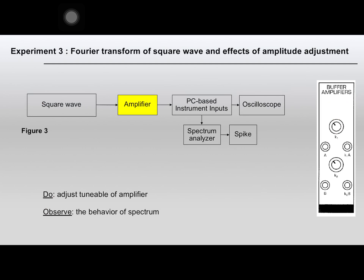In Experiment 3, construct the circuit according to the block diagram in Figure 3. This is similar to Experiment 2, but the input is changed from sine wave to square wave. Use the oscilloscope to display the signal in the time domain and the spectrum analyzer to display the signal in the frequency domain. Adjust the gain of the low-pass filter and see what happens in the time domain and in the frequency domain.